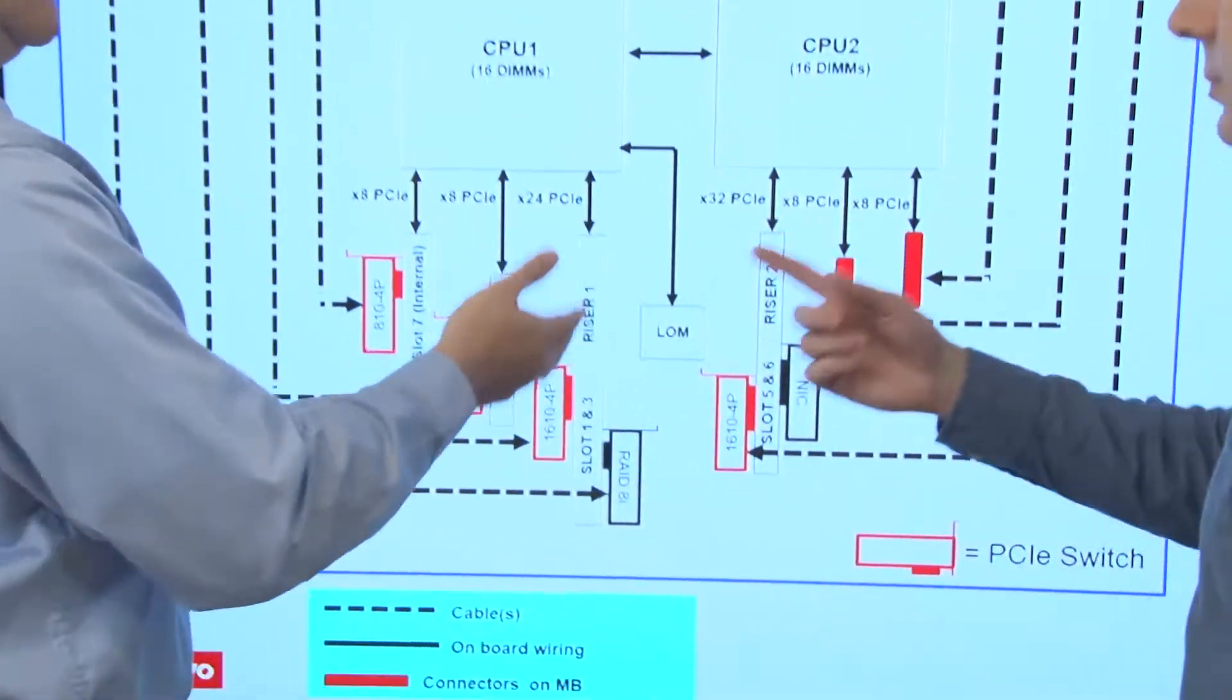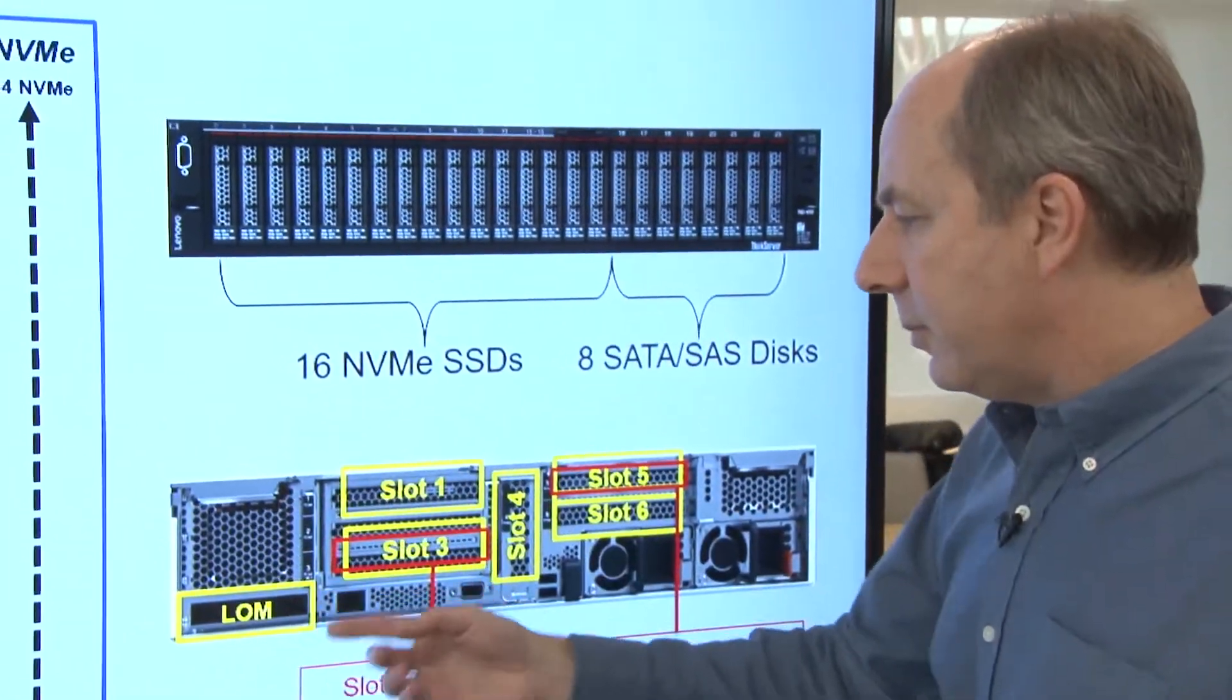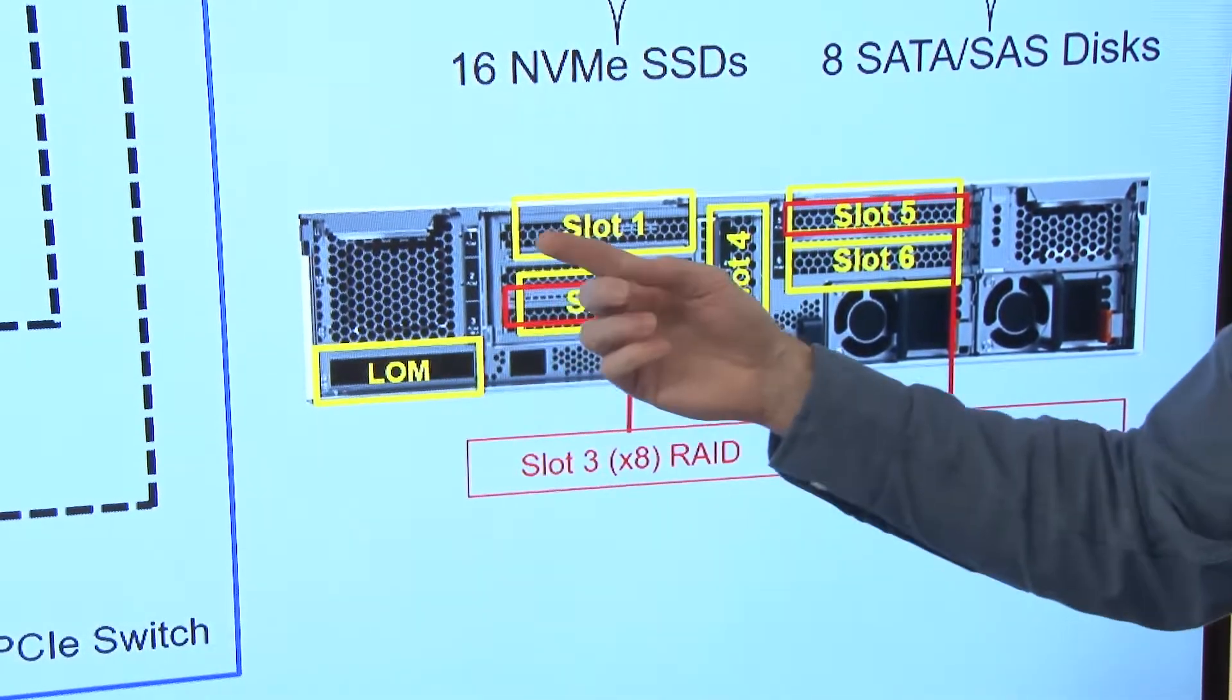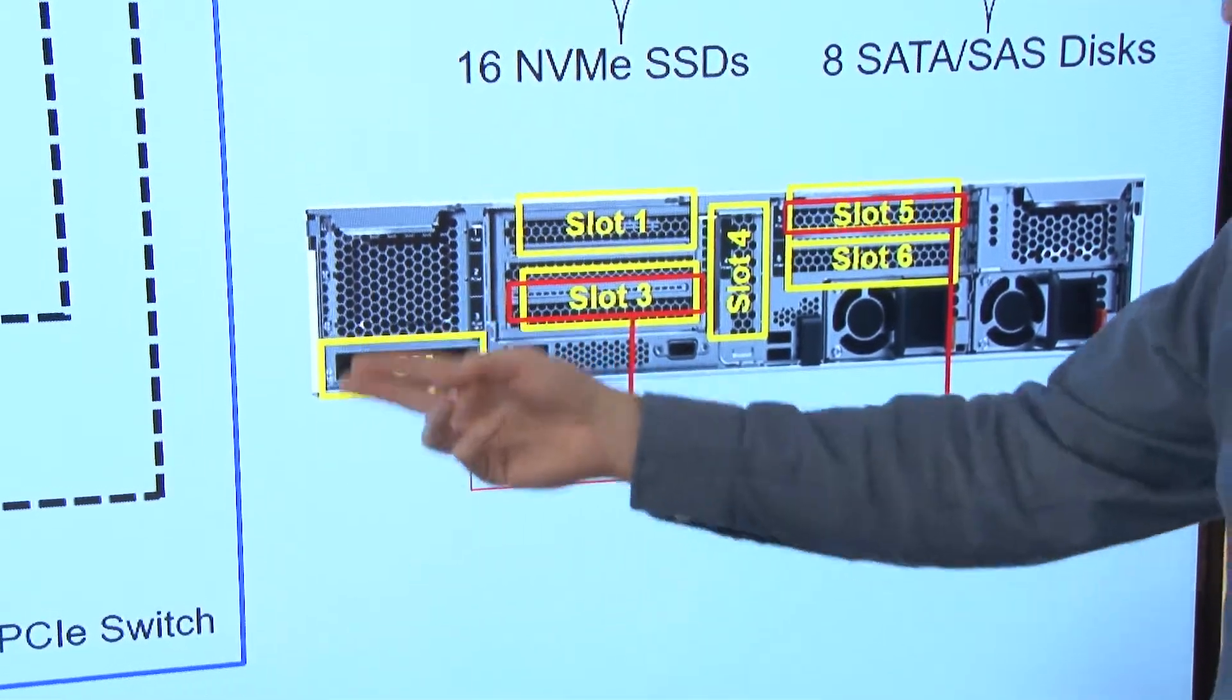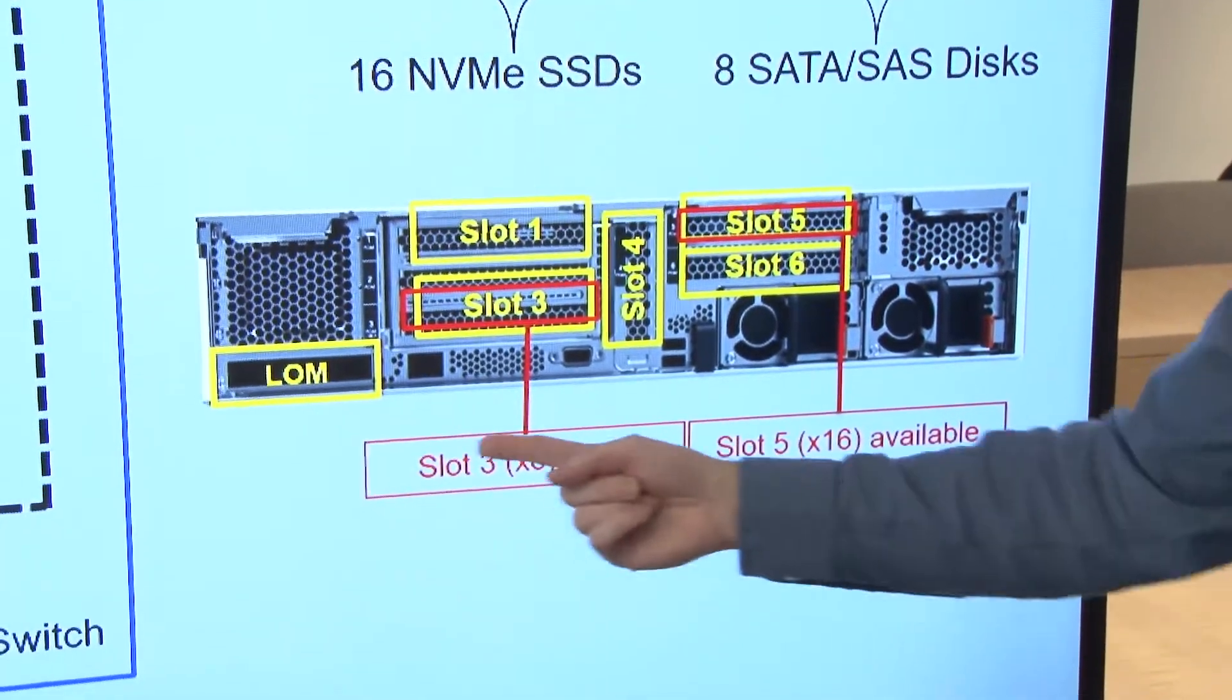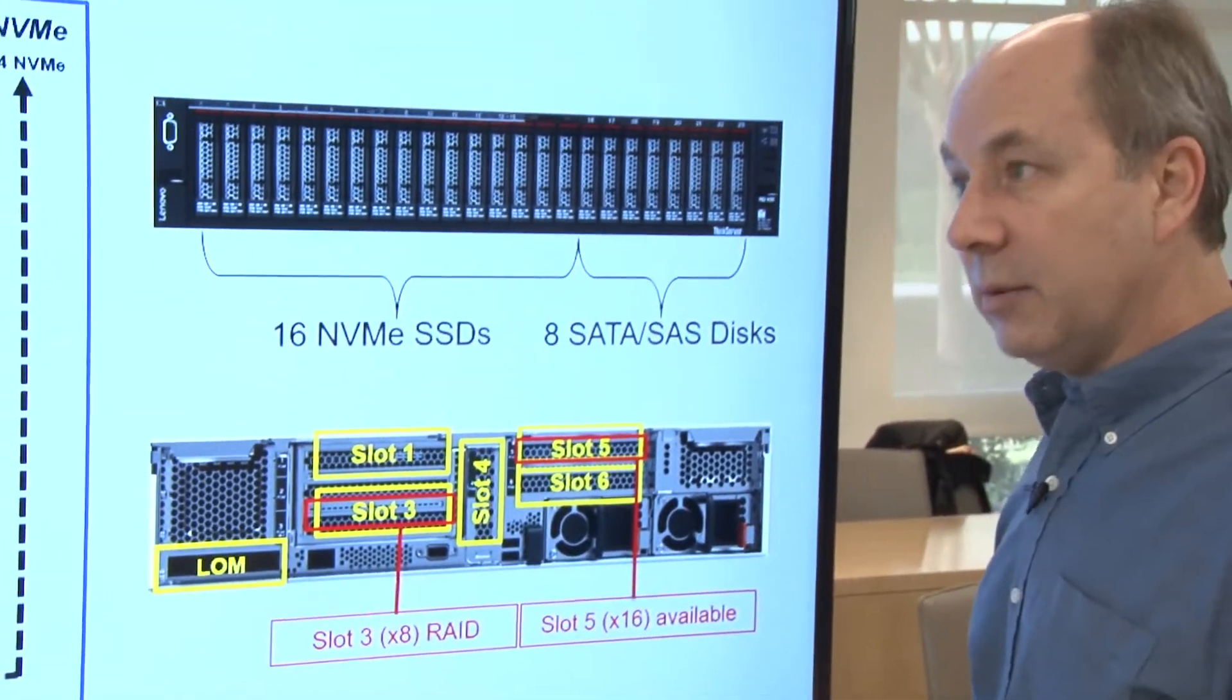We also have the onboard LAN-ON motherboard. Let's look at the back of the server for these. Yes, so there's the LOM slot, LAN-ON motherboard. And so we offer 1GB and 10GB choices there for that. But also in this configuration, there is an additional x16 available slot. And if you don't use the SAS-SATA, you've got the x8 slot that's available.